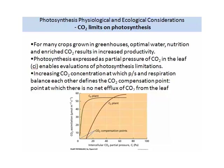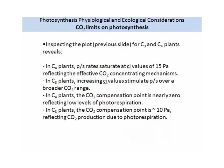Examining the figure in more detail reveals the following. In C4 plants, photosynthetic rates saturate at internal carbon dioxide values of 15, reflecting effective carbon dioxide concentration mechanisms. In C3 plants, increasing CI levels stimulate photosynthesis over a broader carbon dioxide range. In C4 plants, the CO2 compensation point is nearly zero, reflecting low levels of photorespiration. While in C3 plants, the carbon dioxide compensation point is about 10, reflecting carbon dioxide production due to photorespiration.